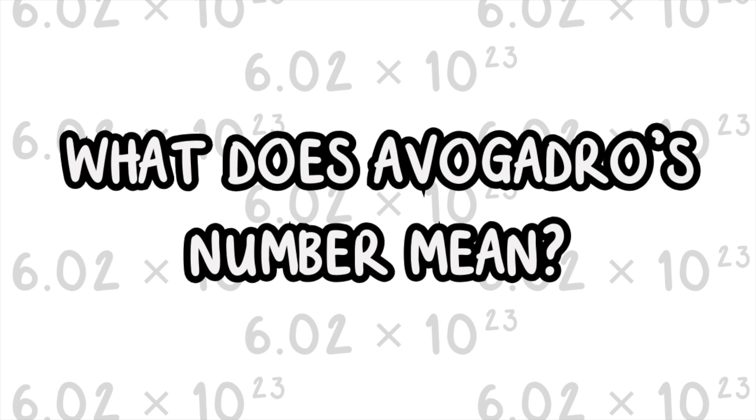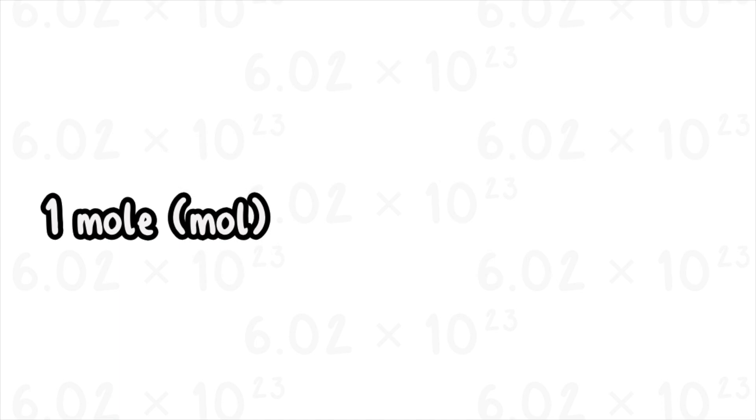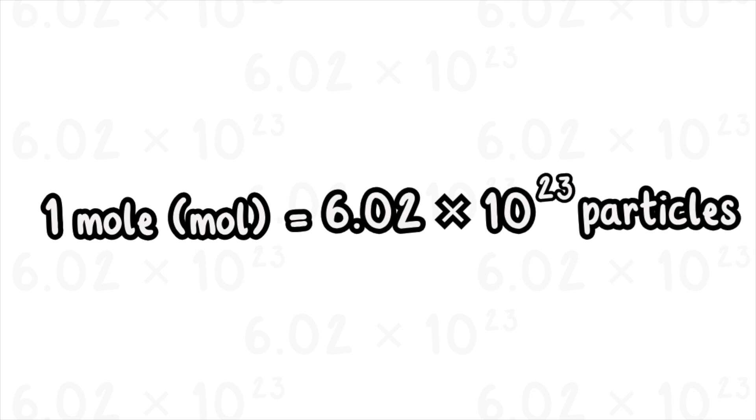What does Avogadro's number mean? Let's say you have just one mole of something. That means you have 6.02 times 10 to the power of 23 particles of it, whether it's atoms, molecules, or ions.